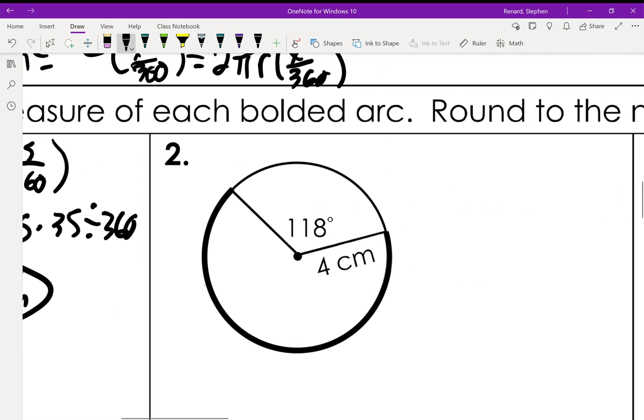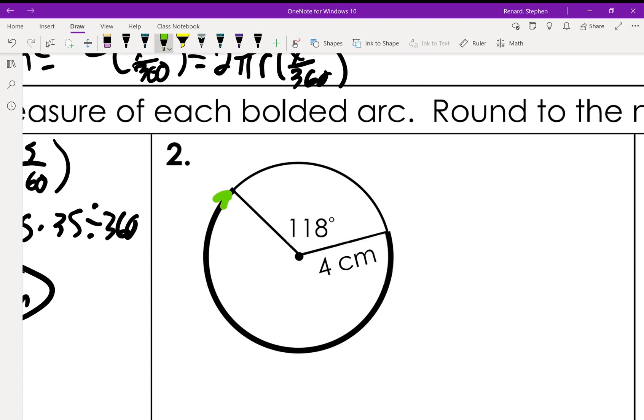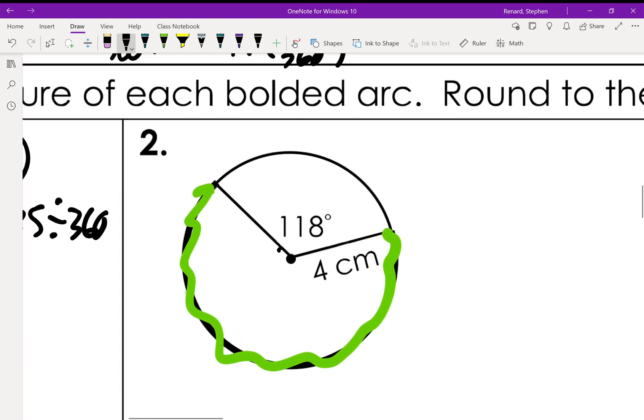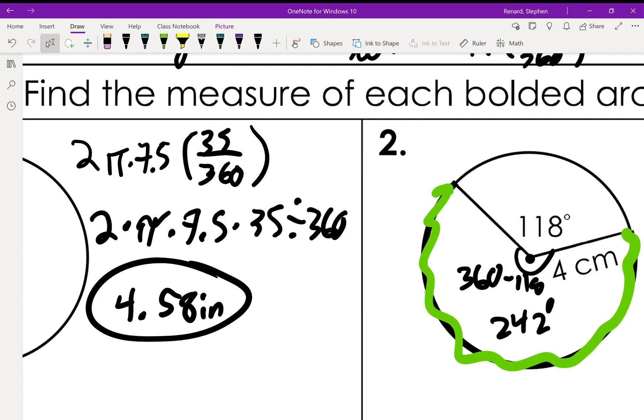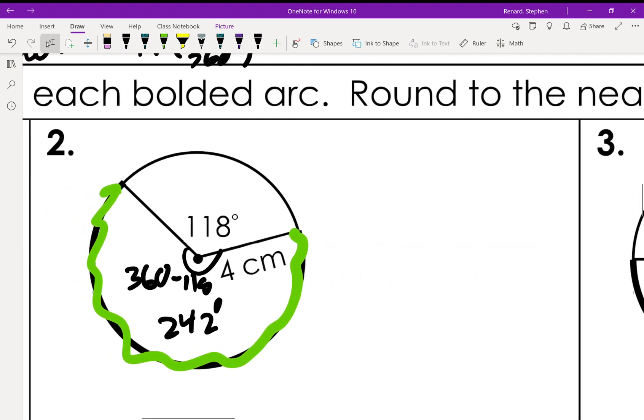Number two. Notice here that the area we're being asked to measure is outside of it. We know that all the way around is 360, so we know that this angle right here is going to be 360 minus 118, or 242 degrees. So we do the exact same thing that we did on number one, but we're doing it here.